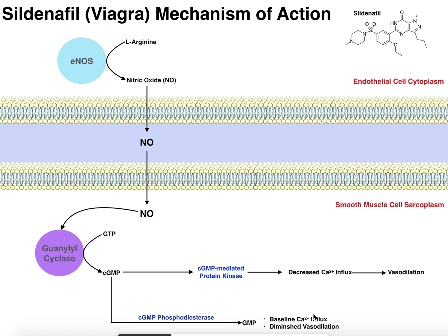In order to have an erection, you have to have blood flow into the penis, and one of the ways that blood flow is maintained is by vasodilation. If you have too much activity, relatively speaking, of this phosphodiesterase, then cyclic GMP is going to be degraded to GMP and you lose that capacity for vasodilation. With age, that's the mechanism of erectile dysfunction — not enough nitric oxide means not enough cyclic GMP and therefore not enough vasodilation to maintain the erection.